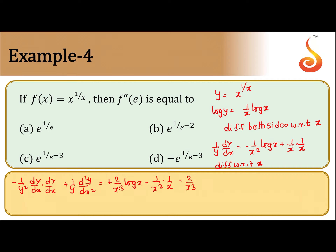In this case, d²y by dx² is required. Now what is dy by dx at x equal to e? So dy by dx equals e to the power 1 by e, within the bracket minus 1 by e square log e plus 1 by e square, which clearly gives dy by dx equal to 0.